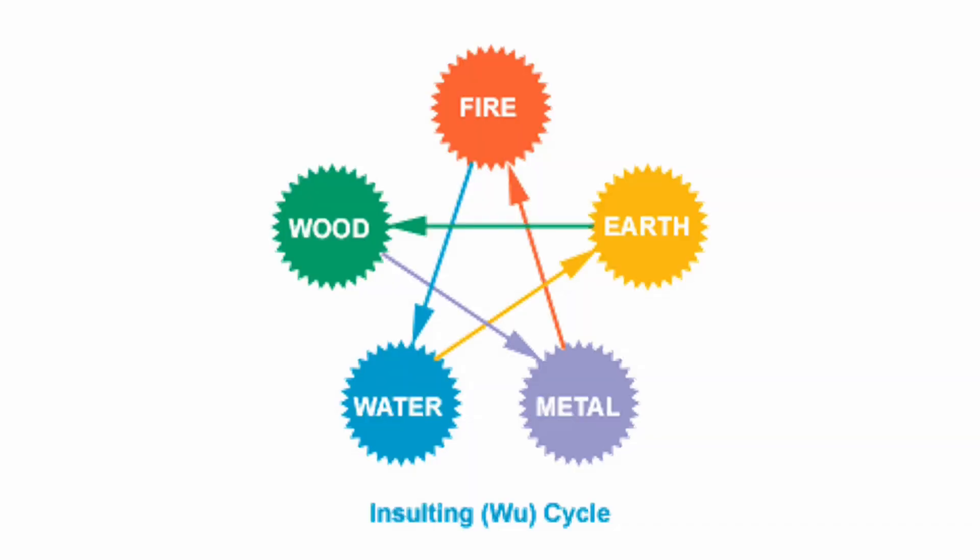The insulting Wu cycle is the opposite of the controlling Ko cycle — it represents an imbalance in the system. In the insulting Wu cycle, the child element that would normally be controlled and balanced by the grandparent in the Ko cycle becomes excessively imbalanced and controls its grandparent. It resists the control and reverses it, somewhat like a manipulative grandchild. For example, instead of metal — the axe — controlling wood — the tree — if wood becomes overly excessive it can insult metal, ganging up on and overwhelming it, causing metal to become imbalanced. This is like a rebellious child insulting or trying to discipline its grandparent.